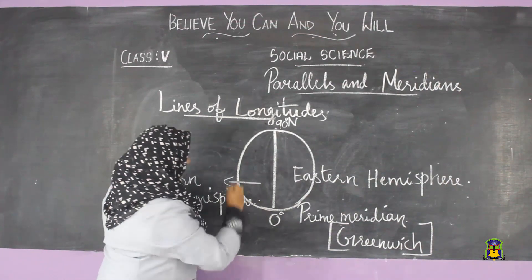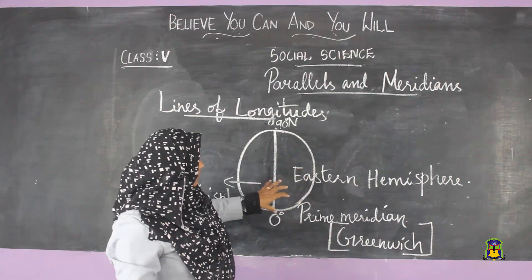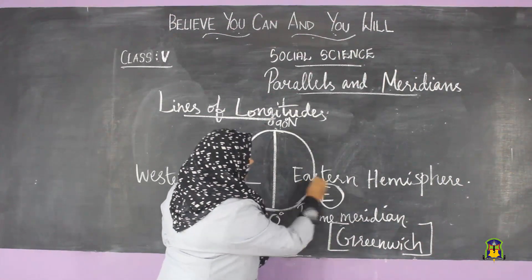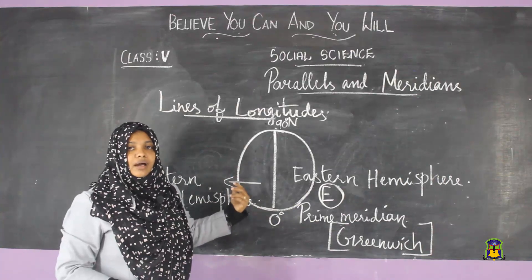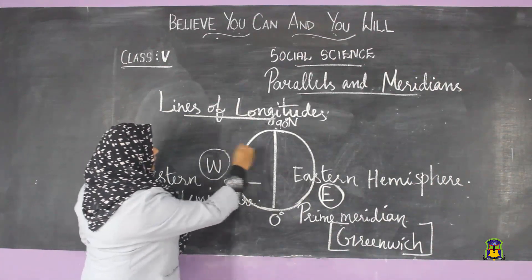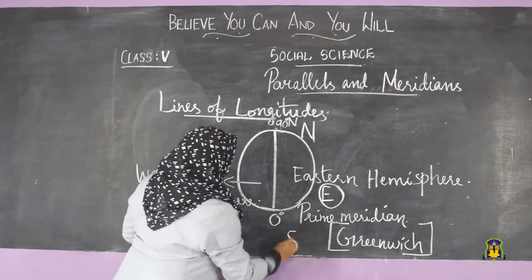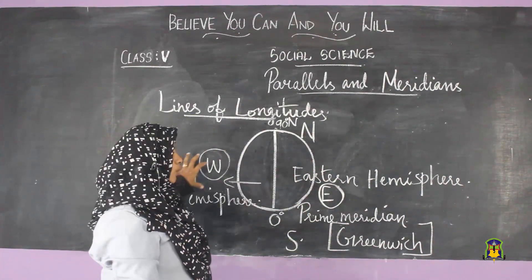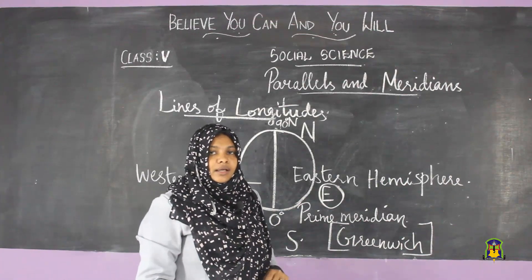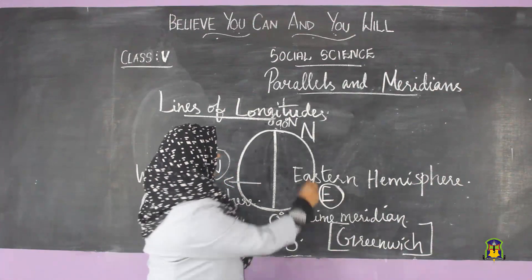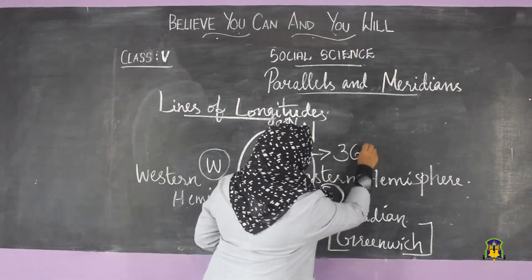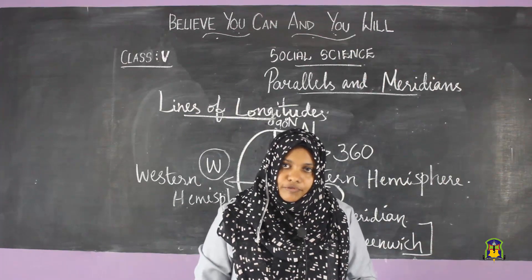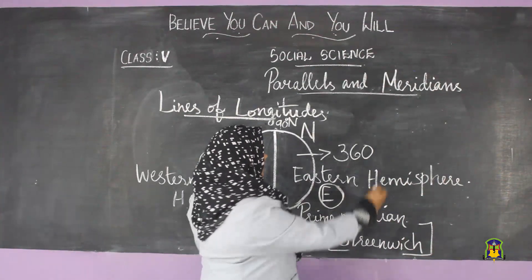The meridians towards the east are marked with the capital letter E, and the meridians towards the west are marked with the capital letter W — similar to how latitudes use N and S. The prime meridian divides the earth into the eastern hemisphere and the western hemisphere. There are 360 lines of longitudes or meridians in total.